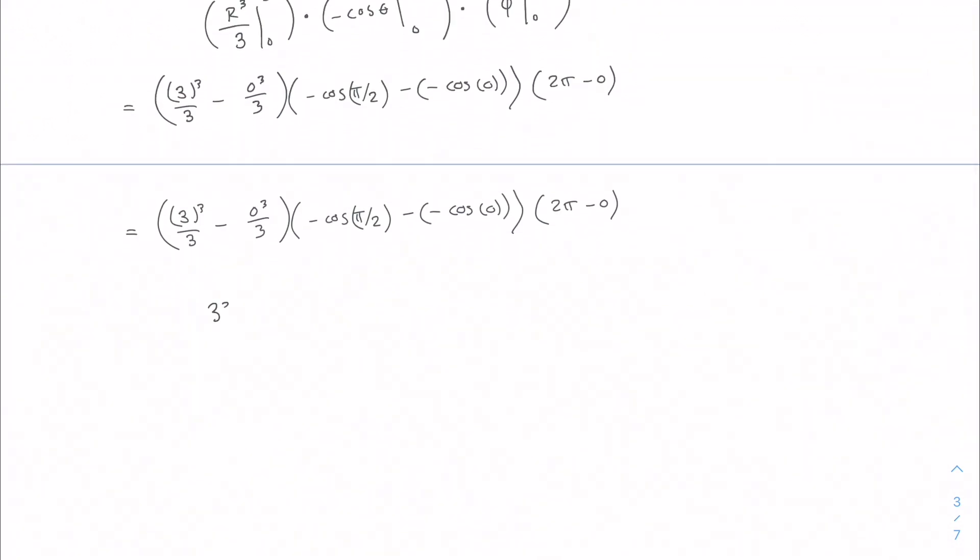Okay, so 3 squared minus 0, cosine of pi over 2 is 0, 0 minus a negative 1, times 2 pi. So we're going to end up with 3 squared times 1 times 2 pi, which gives us 18 pi.